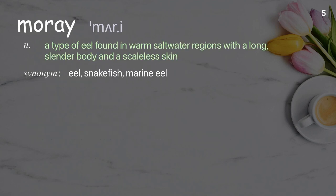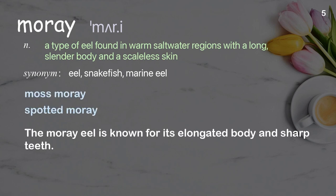Moray. A type of eel found in warm saltwater regions with a long, slender body and a scaleless skin. Examples: moss moray, spotted moray. Sentence: The moray eel is known for its elongated body and sharp teeth.